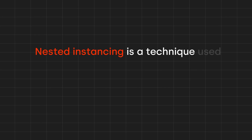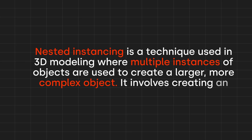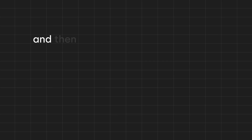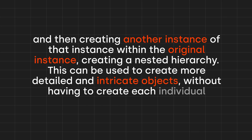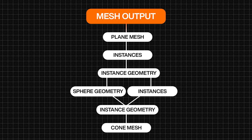Nested instancing is a technique used in 3D modeling where multiple instances of objects are used to create a larger, more complex object. It involves creating an instance of an object and then creating another instance of that instance within the original instance, creating a nested hierarchy. This can be used to create more detailed and intricate objects without having to create each individual element separately. Here's a graph I created to help you visualize this. It's great because you can edit a bunch of things at once, and it's easy on your computer. The simple concept is you can use different sets of instances on some geometry to create a bigger shape — it's a much more optimized way of modeling.